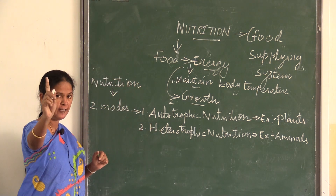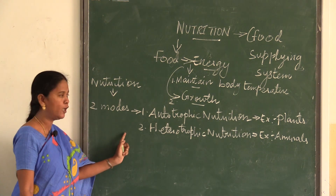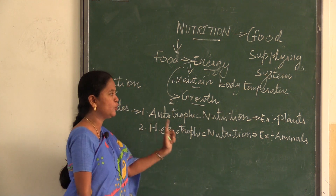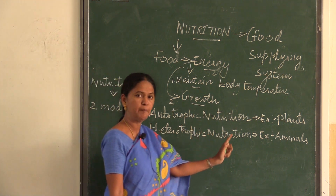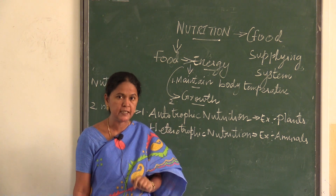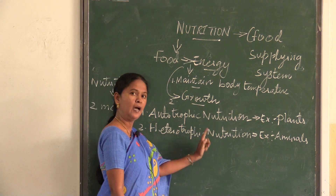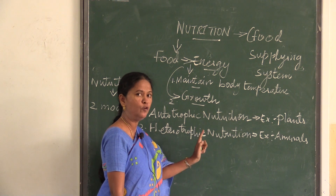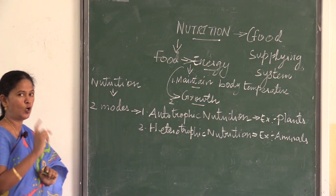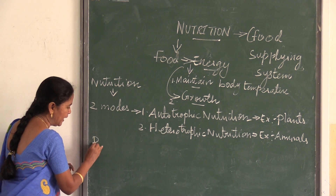Nutrition is one of the life processes. There are 2 modes of nutrition: autotrophic nutrition — example, plants — and heterotrophic nutrition — example, animals. Autotrophic organisms can prepare their own food material, whereas animals under heterotrophic nutrition cannot synthesize their own food material. Our first topic to discuss is plants.